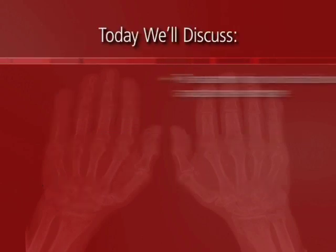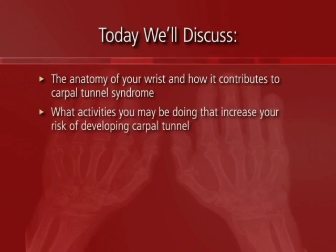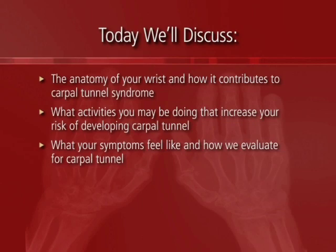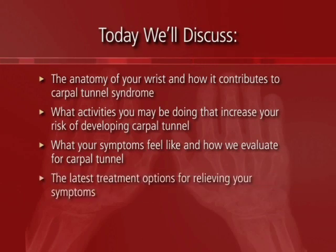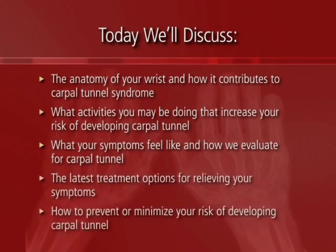Today we're going to talk about the anatomy — or parts list — of your wrist and how it contributes to developing numbness and tingling. We'll also cover what activities increase your risk, what your symptoms feel like and how we evaluate carpal tunnel syndrome, the latest treatment options, and what you can do right now to prevent or minimize your risk.